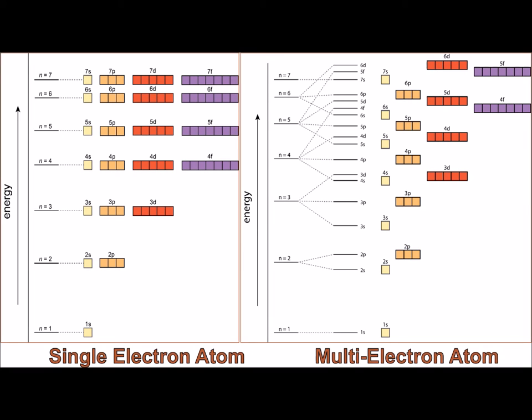In a one-electron system, the subshells are degenerate, meaning S, P, D, F all have the same energy level in each shell. However, in a multi-electron atom, the subshells have different energy levels.